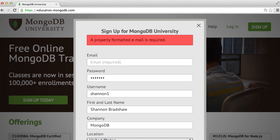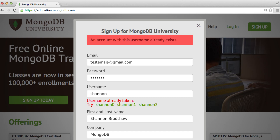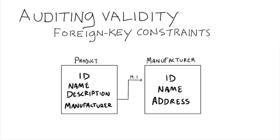There must be a value there. We might have fields that must have a unique value within each data item. We might have fields with foreign key constraints. An example might be product records, each of which must have a reference to a manufacturer, and that manufacturer must exist in our database.